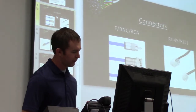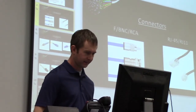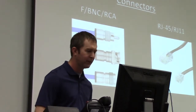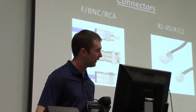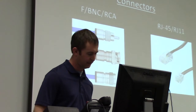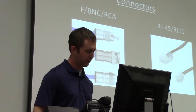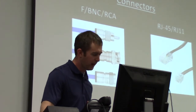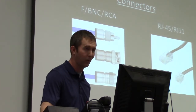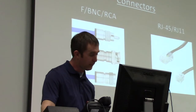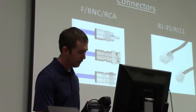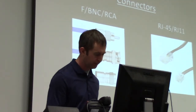Regardless of what kind of cable you're using, chances are you're going to have some kind of connector on one or both ends of that cable. With coaxial cable, you have your F connector, your BNC connector, and your RCA connector, to name a few. With twisted pair cable, you have your RJ45 connector for data and networking, and your RJ11 connector for phone and voice. Fiber optic cable is no exception — let's take a quick look at five different connectors used with fiber optic cable.